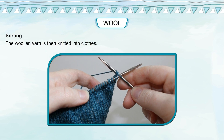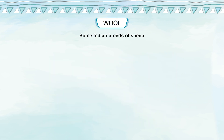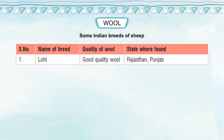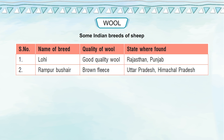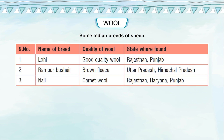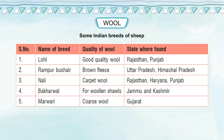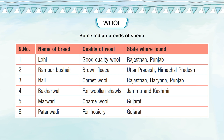The woolen yarn is then knitted into clothes. Some Indian breeds of sheep include: Lohi (good quality wool, found in Rajasthan and Punjab), Rampur Bushair (brown fleece, Uttar Pradesh and Himachal Pradesh), Nalli (carpet wool, Rajasthan, Haryana and Punjab), Bakharwal (used for woolen shawls, Jammu and Kashmir), Marwari (coarse wool, Gujarat) and Pattonwadi (for Hojri, Gujarat).